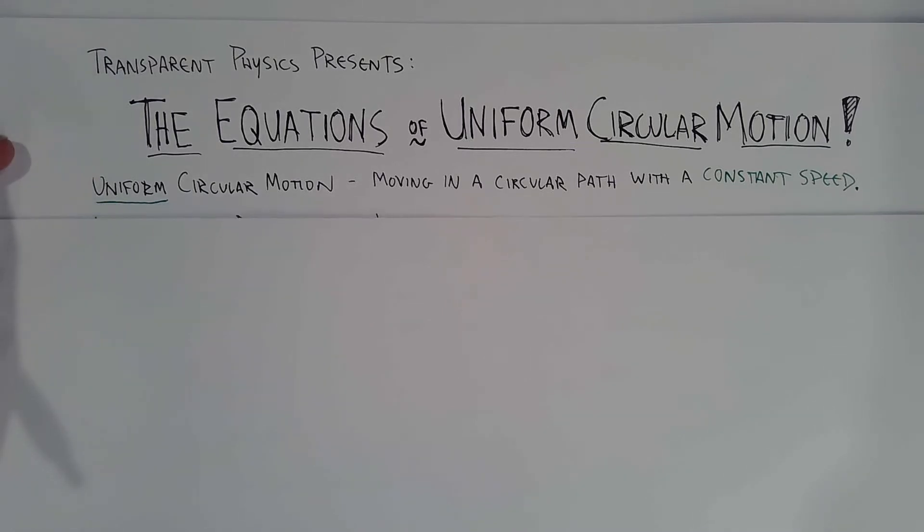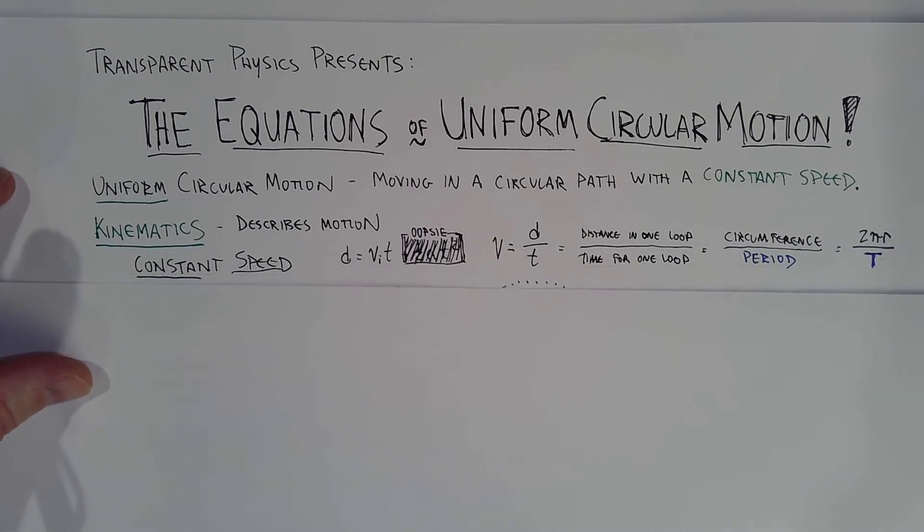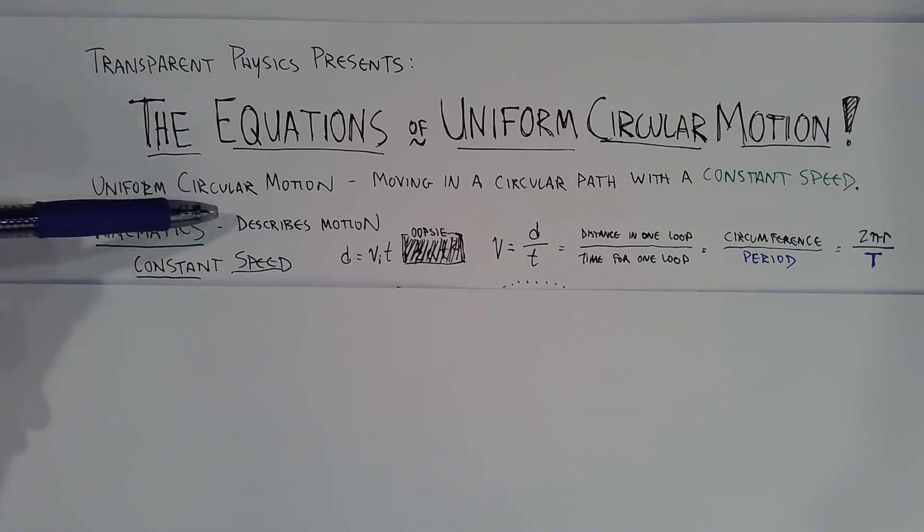So let's take a look. Now, in this unit, there are two types of formulas that we're going to be dealing with. We're going to be dealing with kinematics formulas and we're going to be dealing with the dynamics formulas. Kinematics, generally we learned this earlier in the year, describes motion. It's not explaining how the motion occurs. It's just saying this is what it's going to look like if we're just talking about how an object moves.